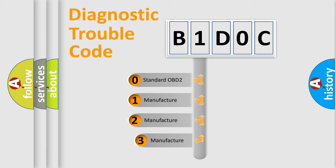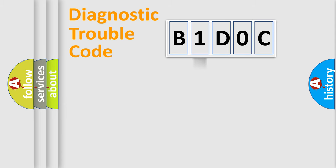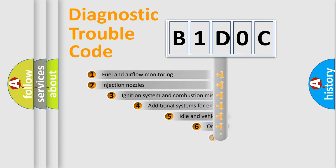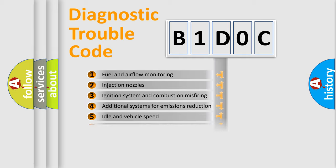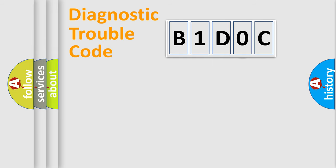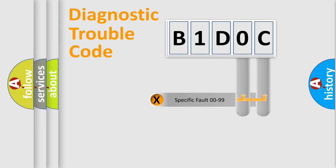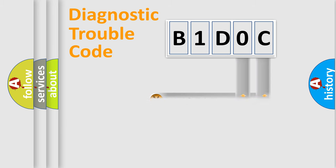If the second character is expressed as zero, it is a standardized error. In the case of numbers 1, 2, or 3, it is a more specific expression of a car-specific error. The third character specifies a subset of errors. The distribution shown is valid only for the standardized DTC code, and only the last two characters define the specific fault of the group.